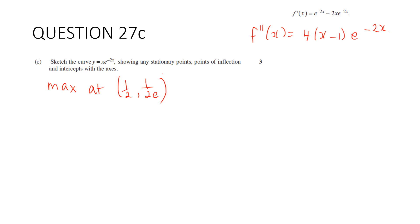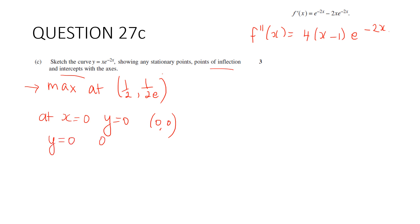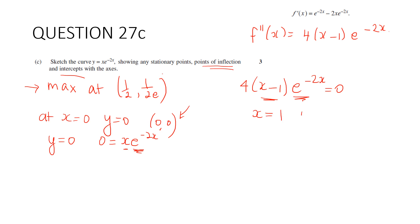Part C: sketch the curve y = x·e^(−2x) showing stationary points, inflections, and intercepts. The only intercept with the axes is at (0, 0). For inflections, set f''(x) = 0: 4(x − 1)e^(−2x) = 0, giving x = 1. Substituting: y = e^(−2) = 1/e². So there is an inflection at (1, 1/e²).